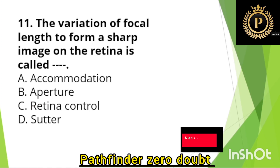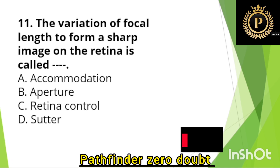The variation of focal length to form a sharp image on the retina is called — Option A: Accommodation.